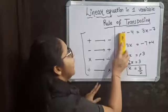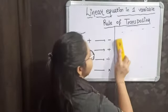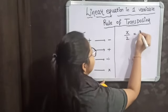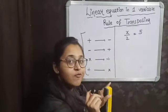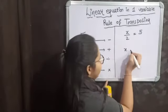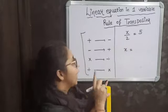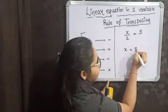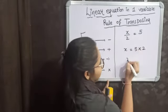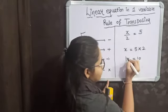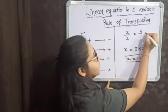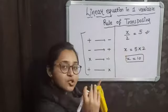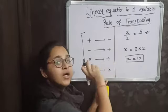Let's take another example: x by 2 is equal to 5. We have to find the value of x. Here, 2 is in division, and by the rule of transposing, division becomes multiplication. So x equals 5 multiplied by 2, which is 10. So x equals 10 is your solution of this equation. This was all about how we can find the solution of an equation by the rule of transposing.